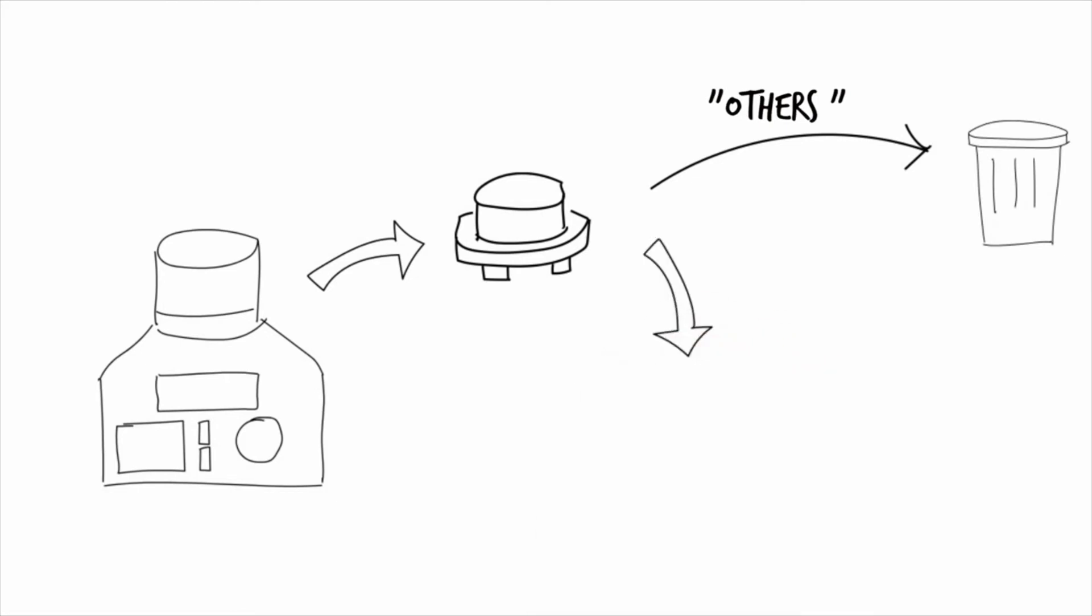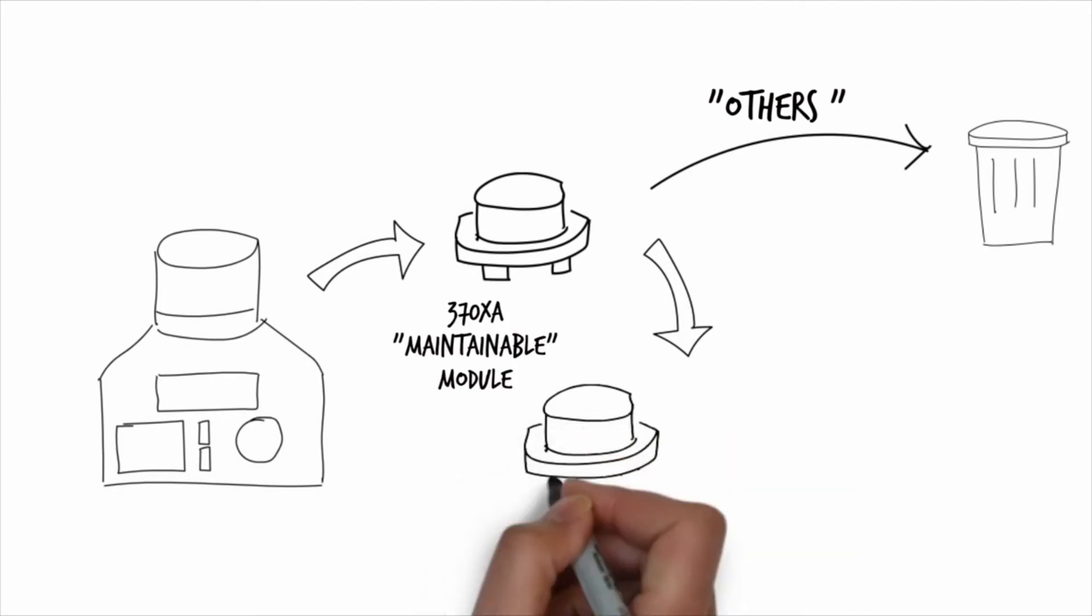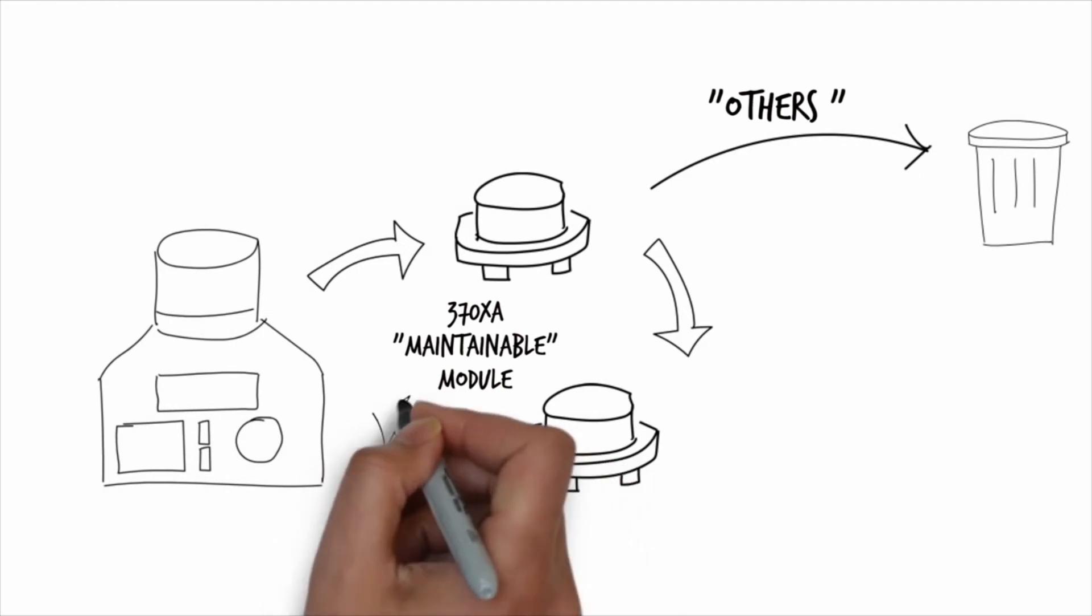But the 370XA has a replaceable and rebuildable maintainable module. With this feature, after replacing one module, you can rebuild the old one, or have Emerson rebuild it for you.